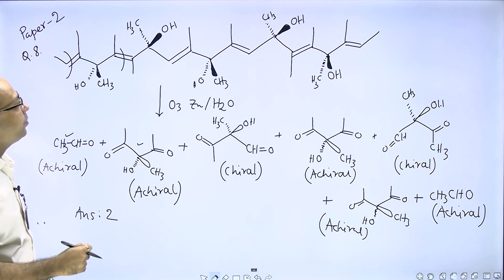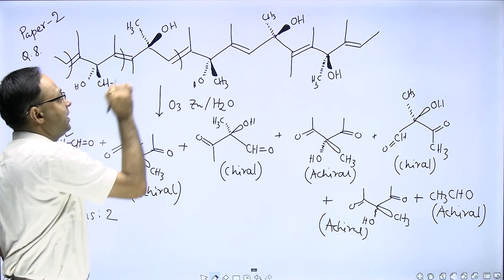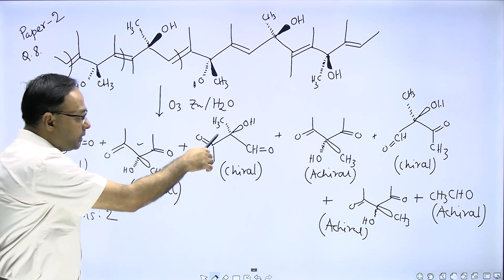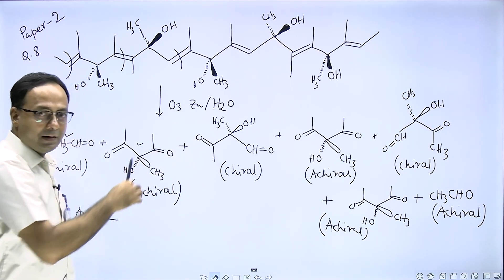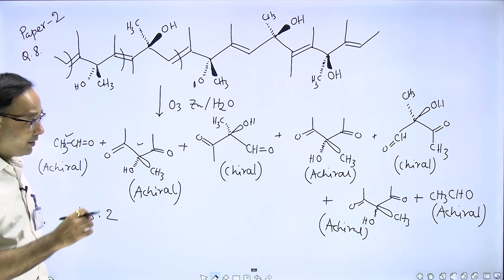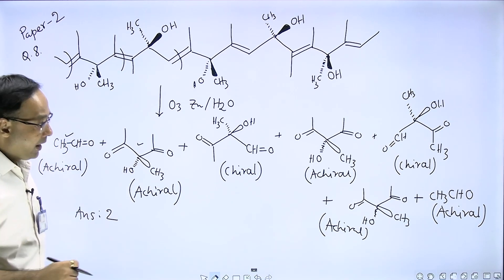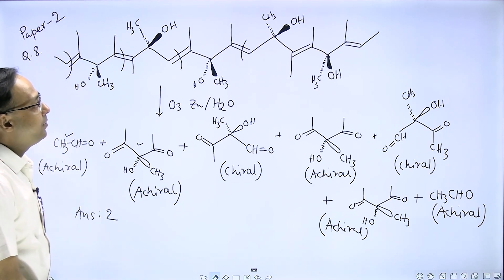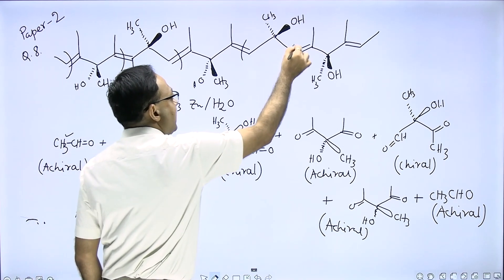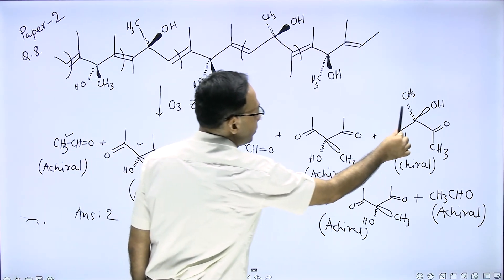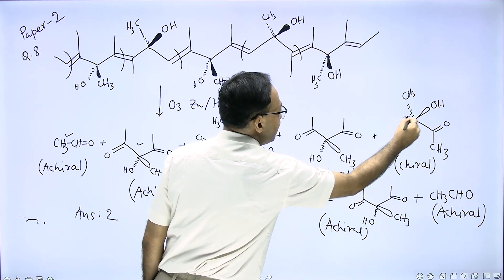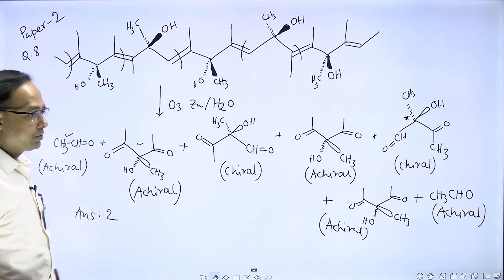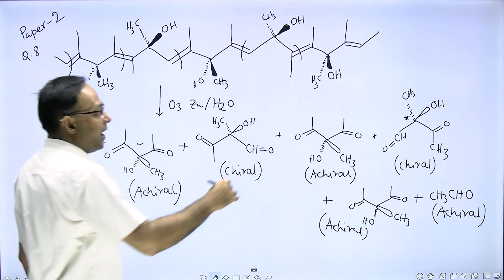This is a chiral molecule because here one single chiral center is present with four different groups around that center. And again this is a chiral molecule. This is again another molecule which is observed that has a chiral center present, so this is an example of a chiral molecule.